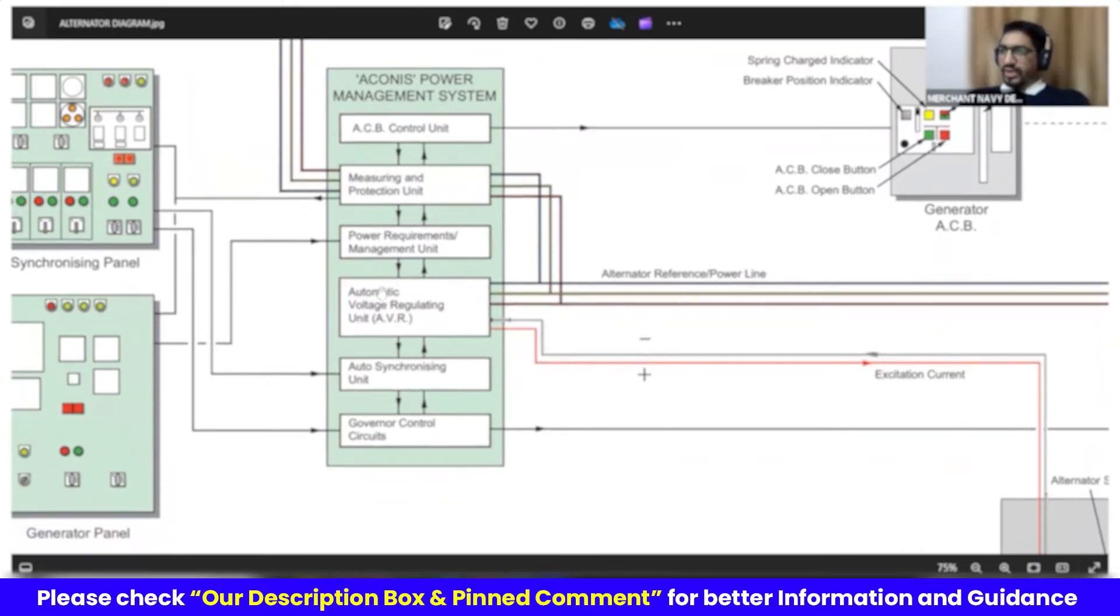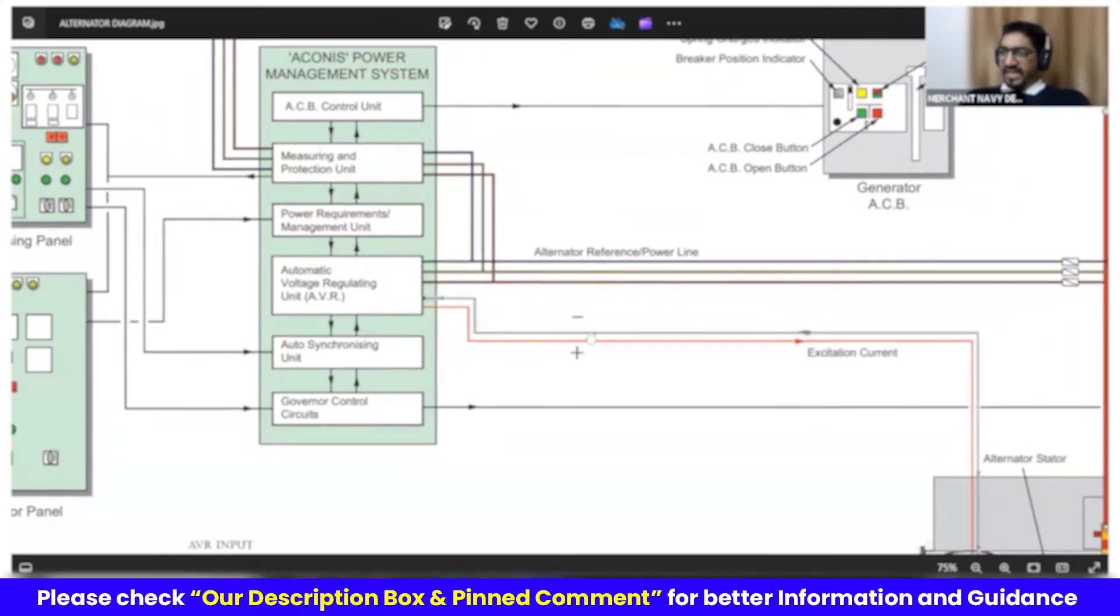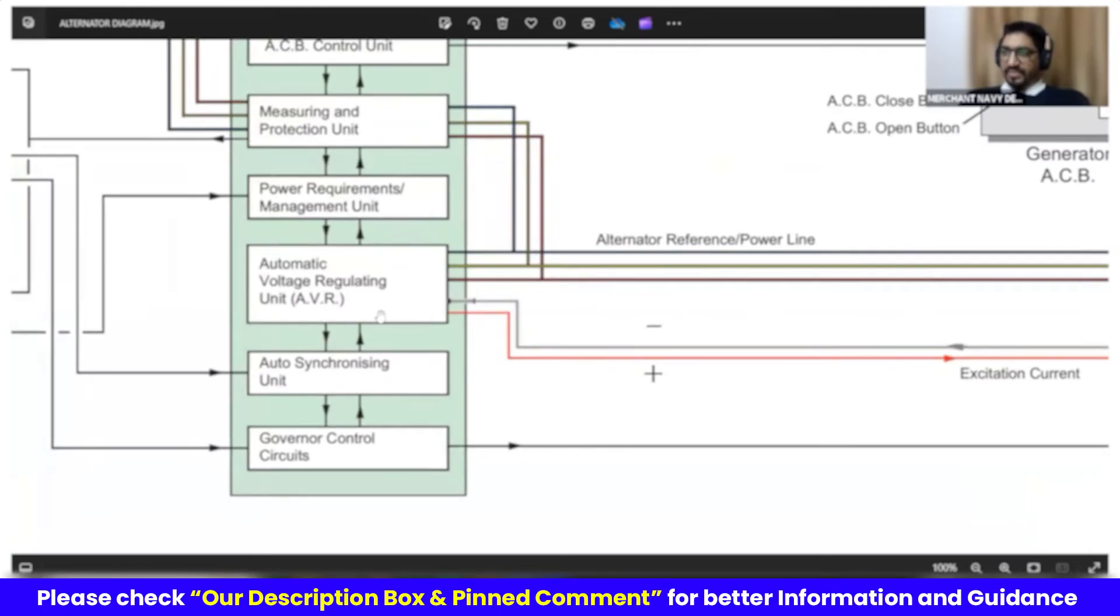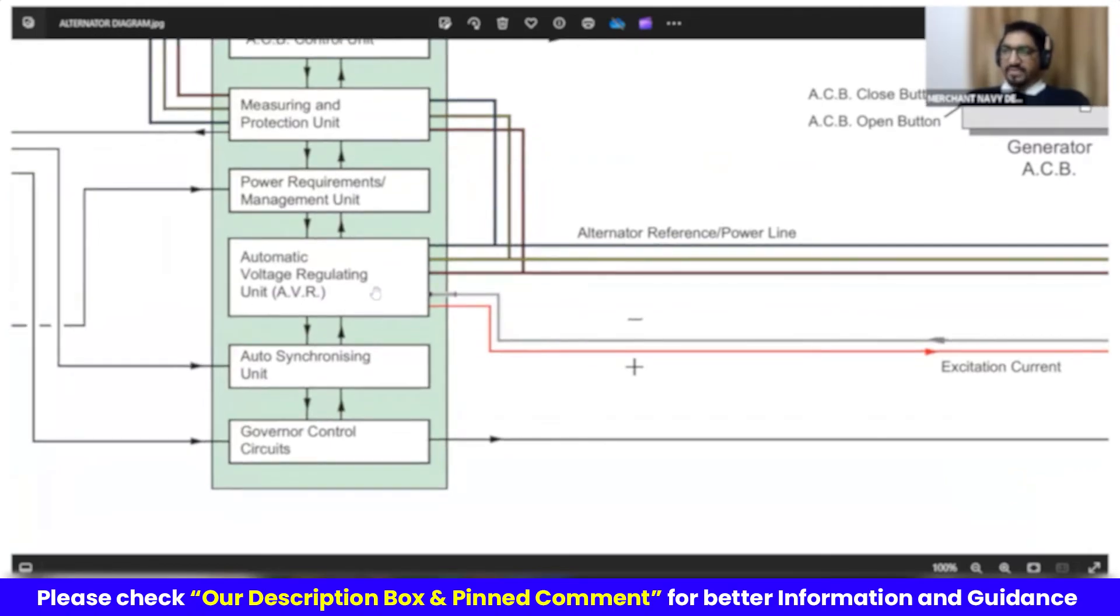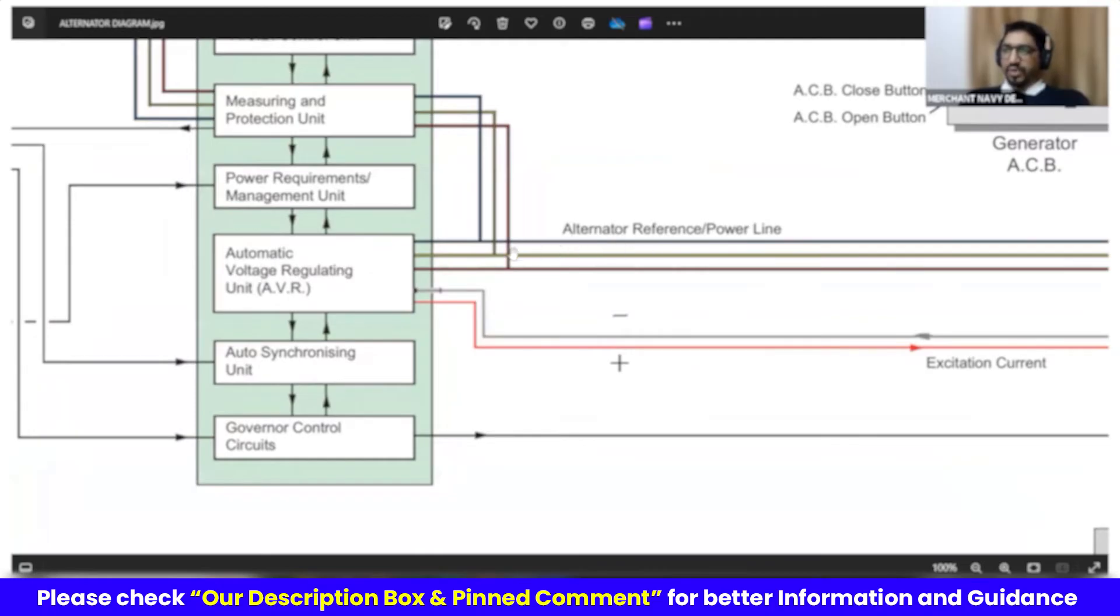Also, it is going to AVR. This is for control part. Measuring and protection is different from control. Control is basically to check if it is 440, then fine. If it is less than 440, a DC output from the AVR needs to be changed. This is an AVR, which is inside the main switchboard. Sometimes it is in the generator also, alternator. It is part of MSB, main switchboard.